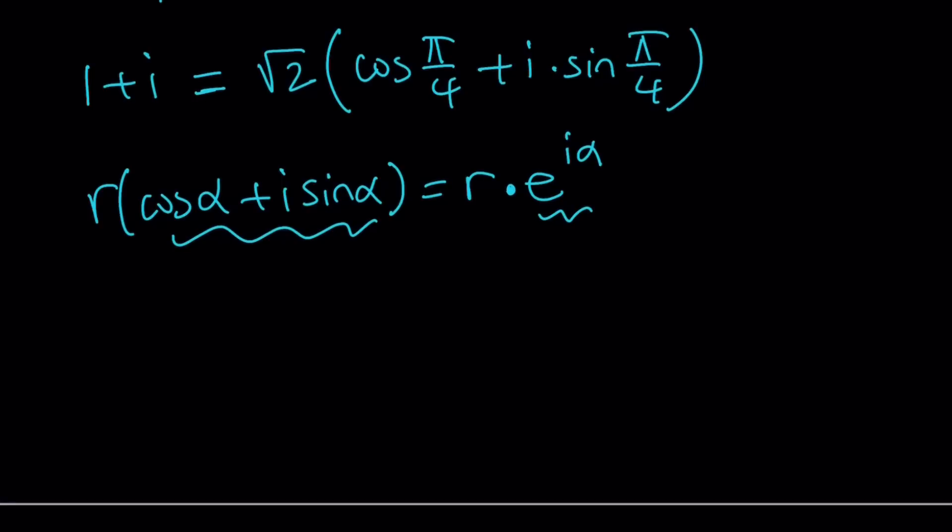It's also nice because suppose you have two numbers like e to the i alpha and e to the i beta. Multiplication and division becomes much easier. That's why it's a really nice form. Let's convert our number into that form. That's going to be square root of two times e to the power i alpha, i times pi over 4.